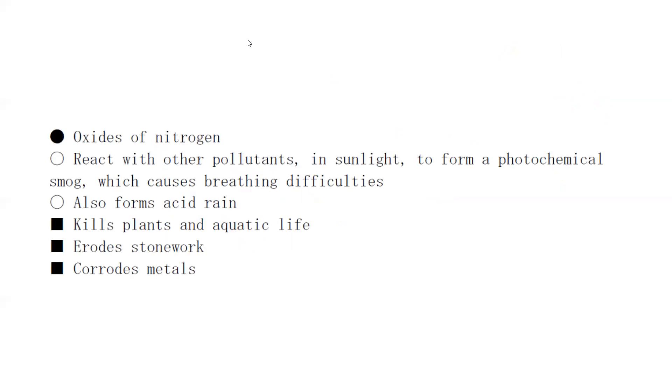Oxides of nitrogen - this is produced in car engines. Inside the car engine, the nitrogen and oxygen from air react and form oxides of nitrogen. These oxides of nitrogen can also form acid rain because oxide of nitrogen is a non-metal oxide, and non-metal oxides are acidic, so it can cause acid rain.